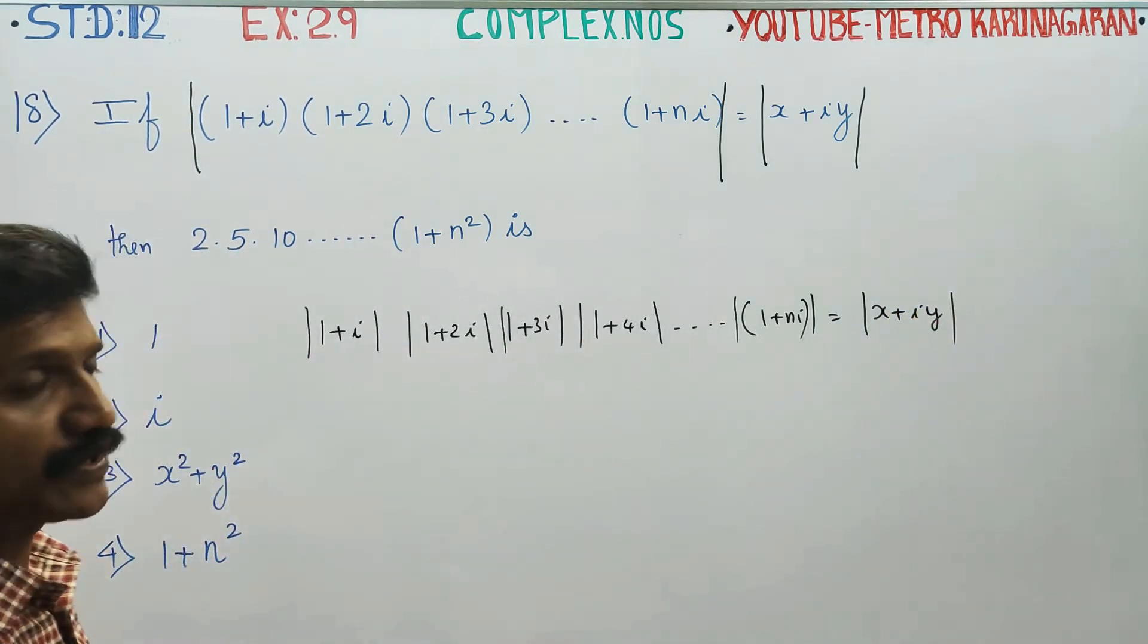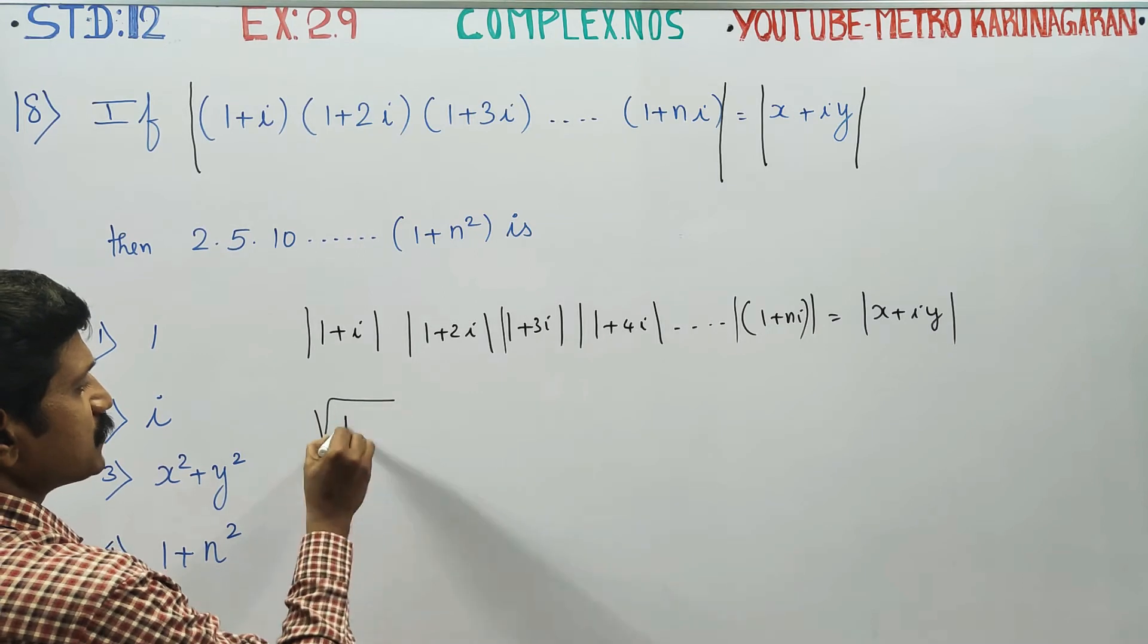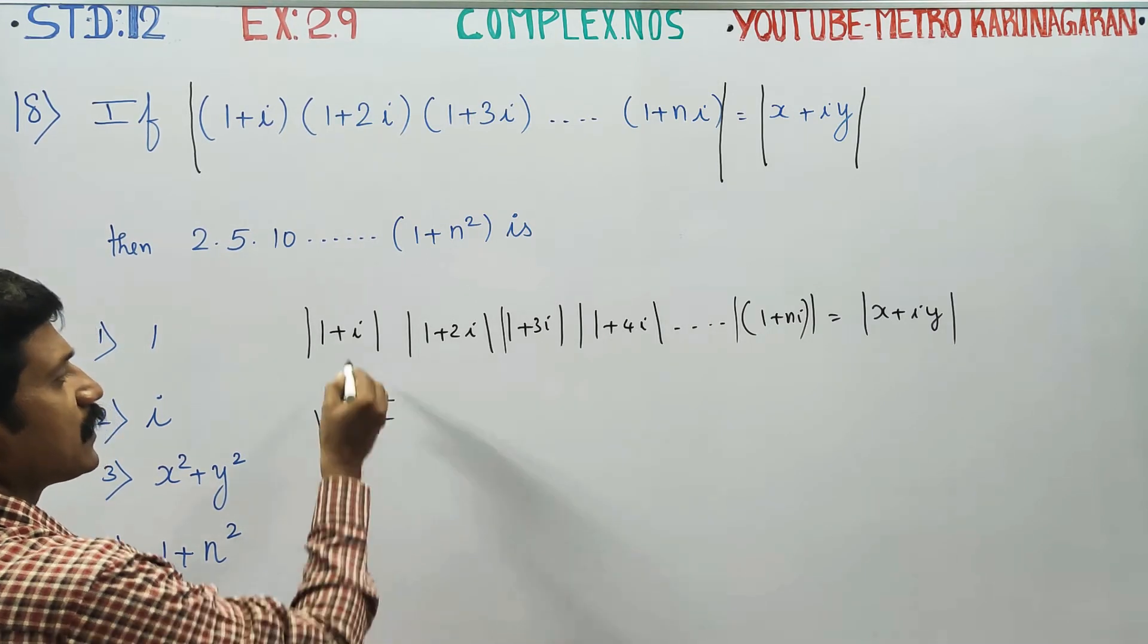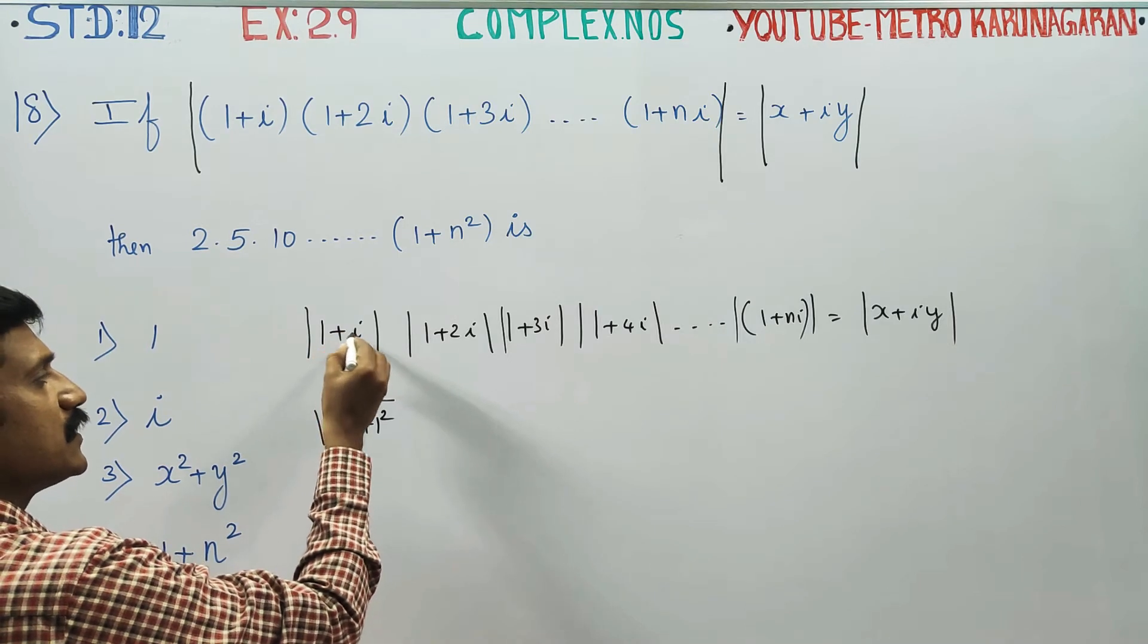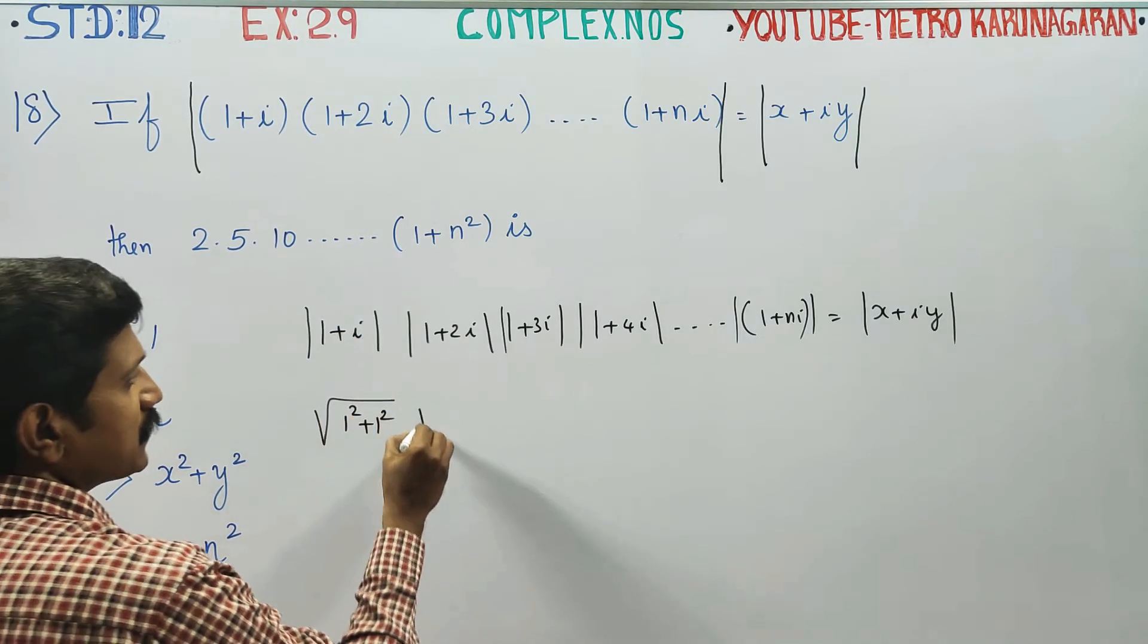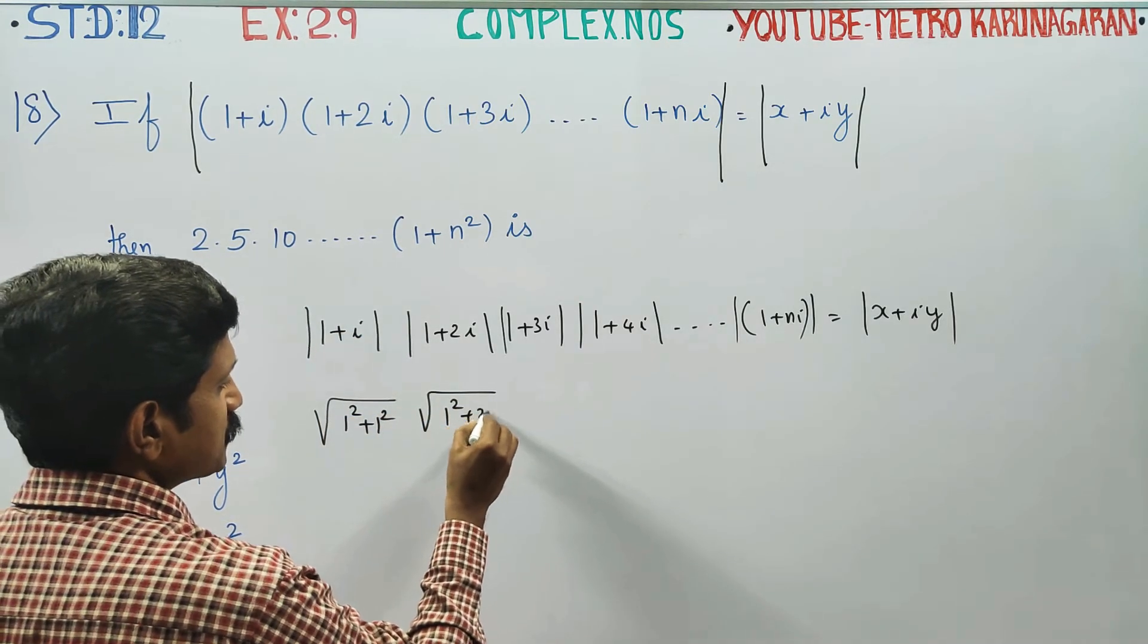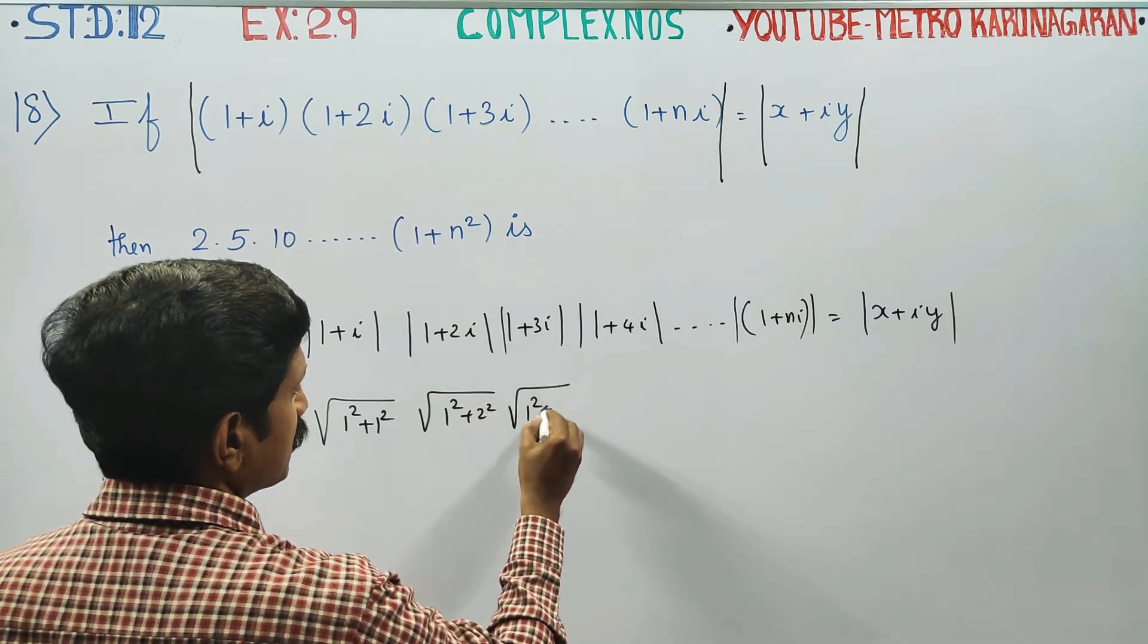The modulus is square root of a square plus b square. Square root of x square plus y square, square root of real part square plus imaginary part square.